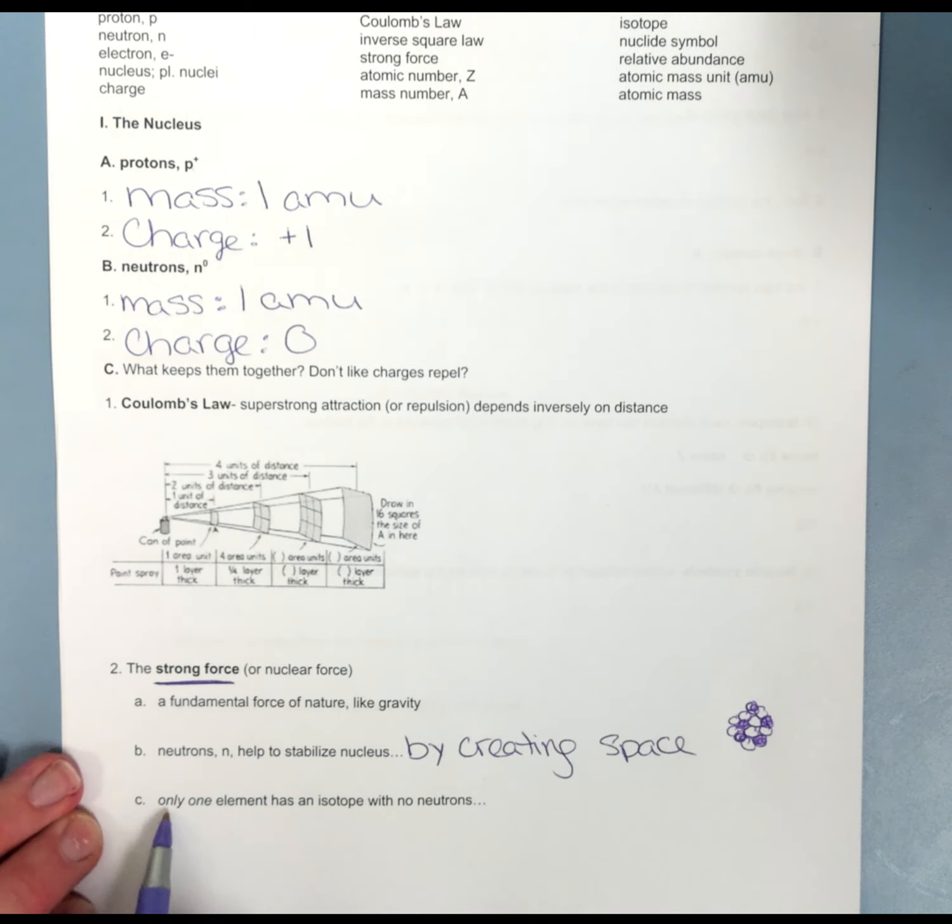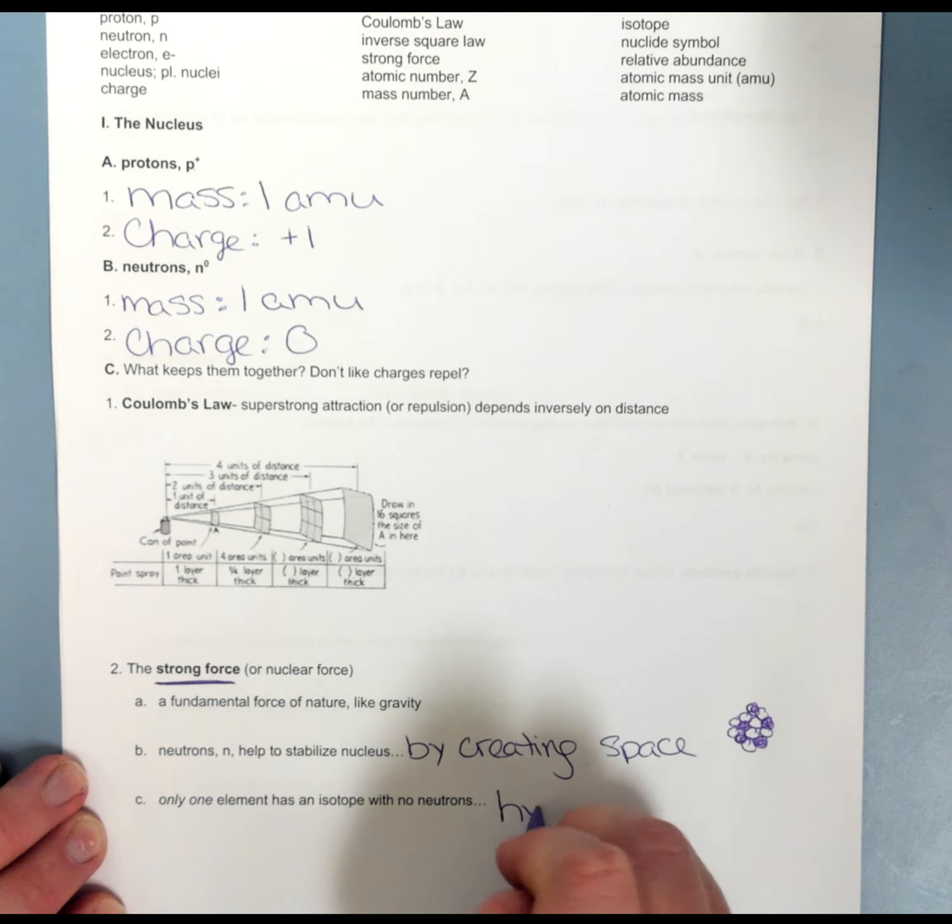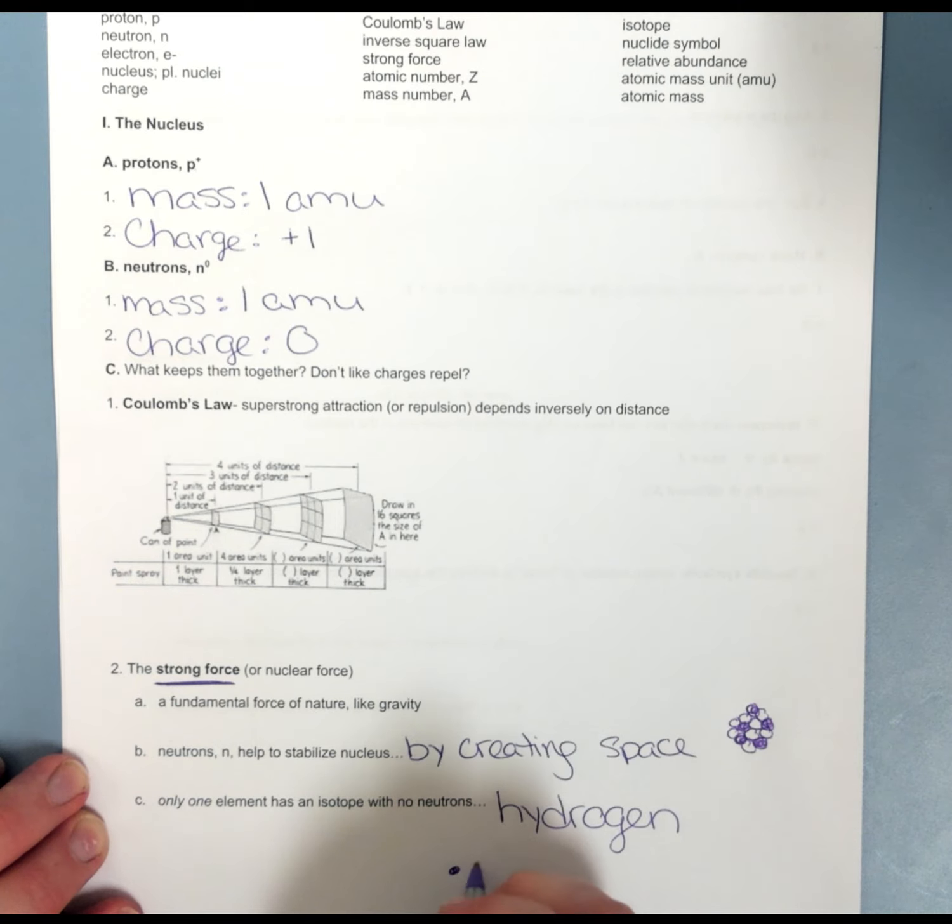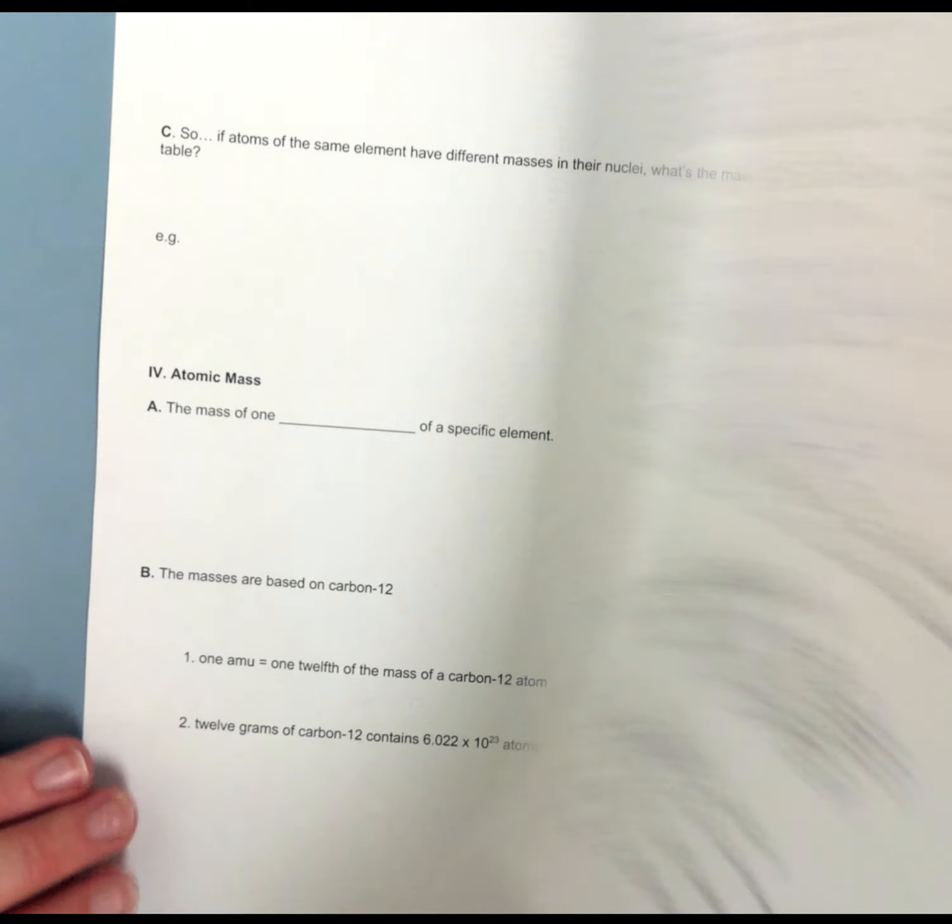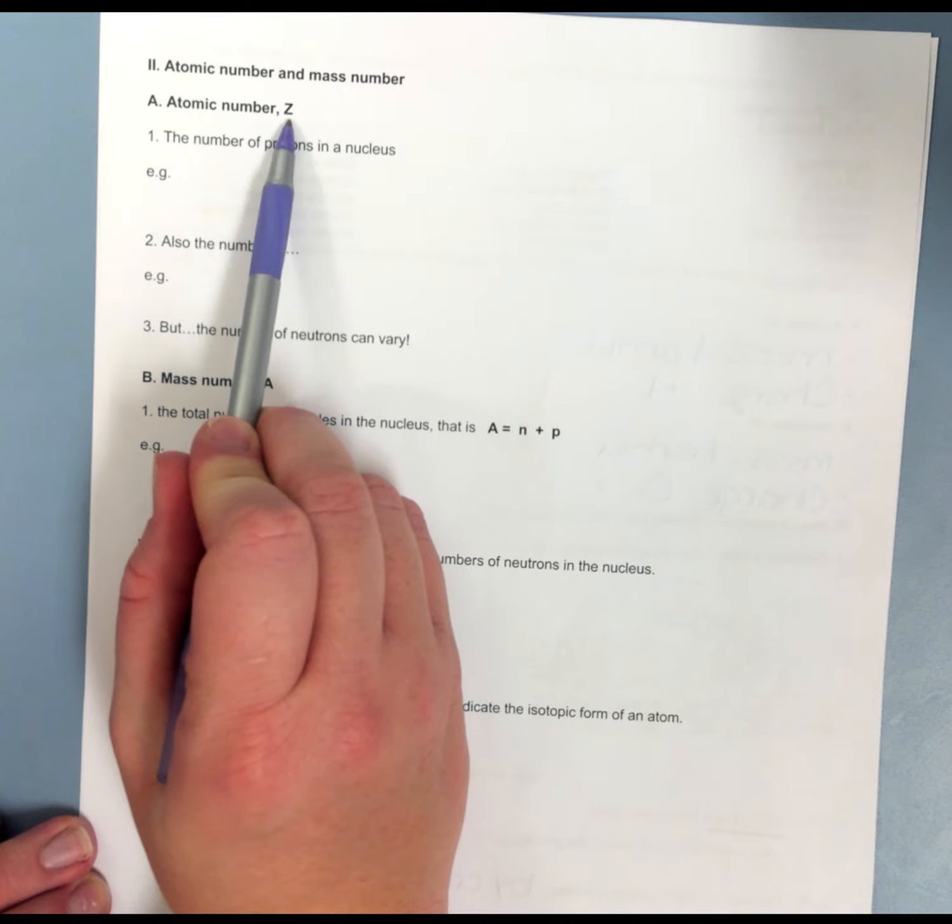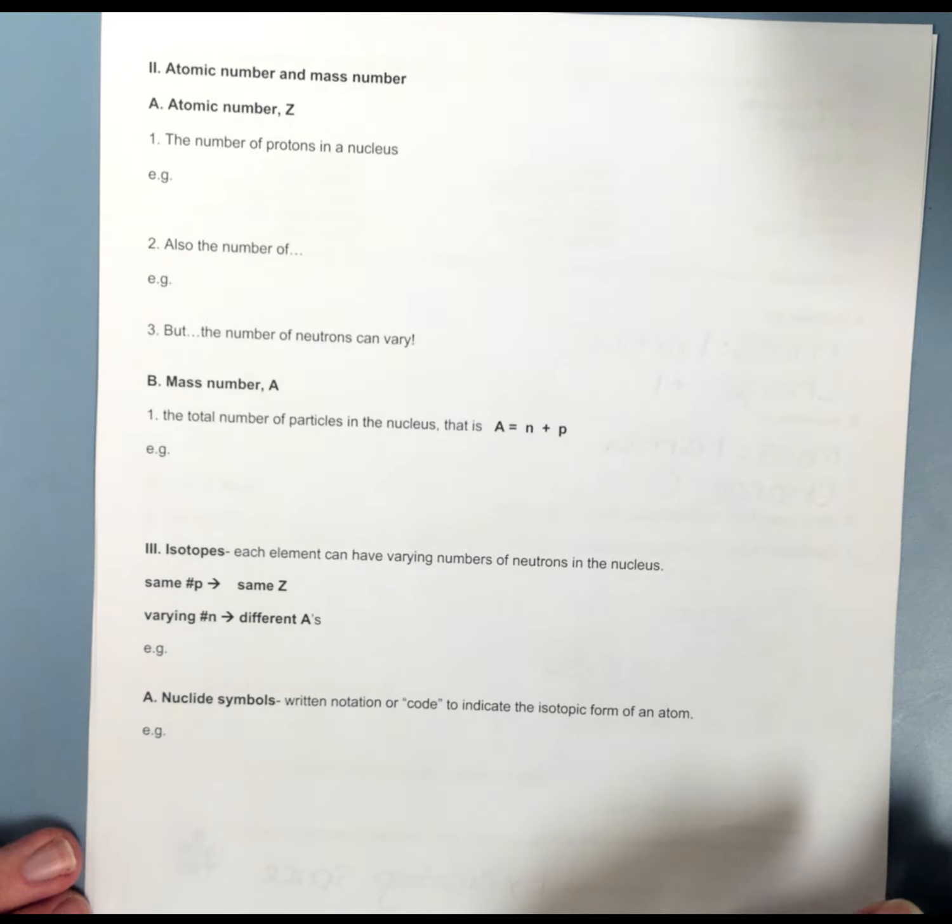There's only one element on the periodic table that has an isotope with no neutrons, and that element is hydrogen. Hydrogen has one proton in the center and one electron around the outside. But how do we figure out how many protons and electrons an atom has? When we do that, we're looking at what we call the atomic number. My atomic number is represented by the letter Z.